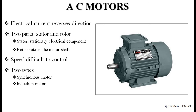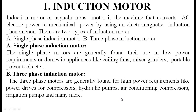The next major category is AC motors — alternating current motors, where the electrical current reverses direction. The two main parts of the motor are the stator, which is the stationary electrical component, and the rotor, which rotates the motor shaft. Speed control is difficult for AC motors. There are two types: synchronous motors and induction motors.